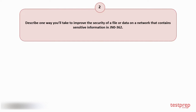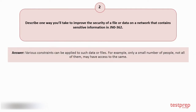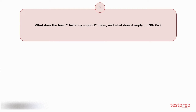Question number two: Describe one way you'll take to improve the security of a file or data on a network that contains sensitive information in JN-0362. Your answer is: Various constraints can be applied to such data or files. For example, only a small number of people — not all of them — may have access to the same.